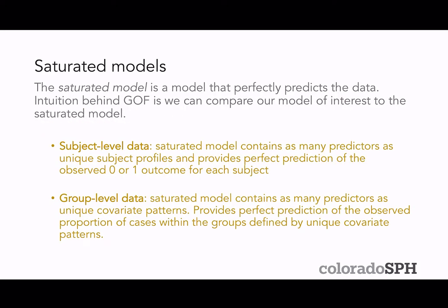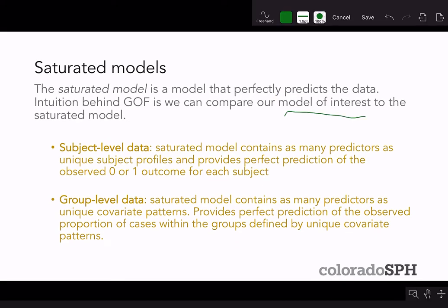The saturated model is a model that perfectly predicts the data that you observe. The intuition behind the goodness of fit test is that we compare our model of interest to the saturated model, and we want our model of interest to be able to predict almost as well as the saturated model. For subject-level data, the saturated model contains as many predictors as unique subject profiles and provides perfect prediction of the observed zero or one outcome for each subject. For group-level data, the saturated model contains as many predictors as unique covariate patterns, and provides perfect prediction of the observed proportion of cases within each group.